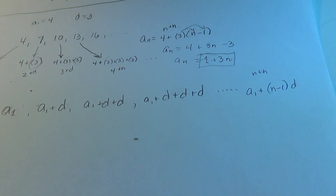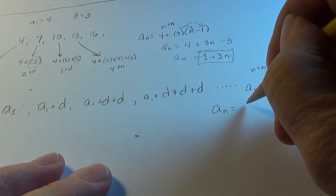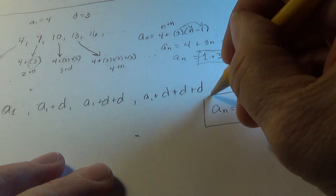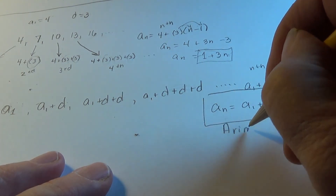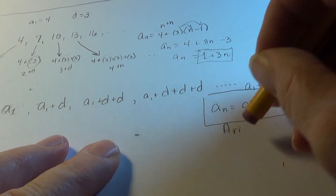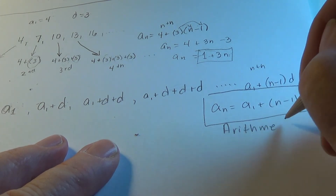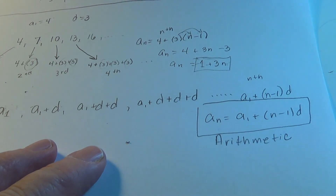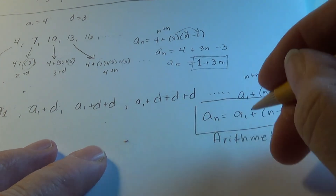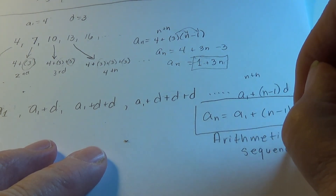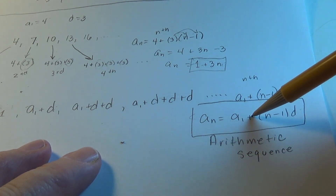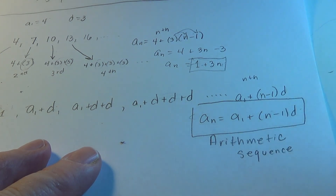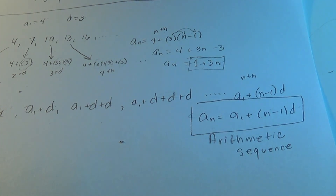The formula for the nth term of an arithmetic sequence — and this will get you through so many problems — is: a sub n equals a sub 1 plus d times (n minus 1). This is only for arithmetic sequences. In an arithmetic sequence, the nth term is the first term plus the common difference times the number of the term minus 1. It works every time.